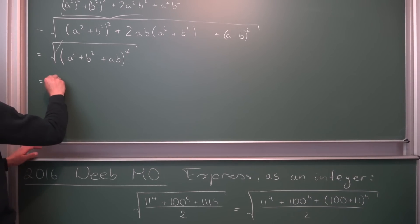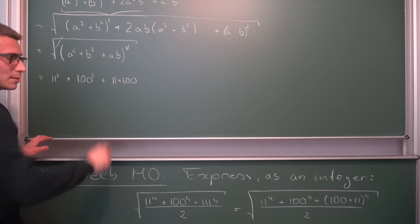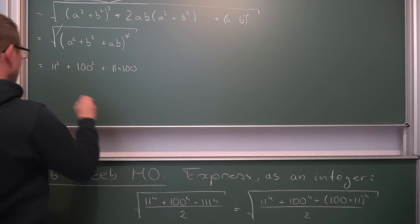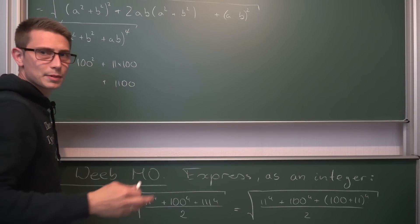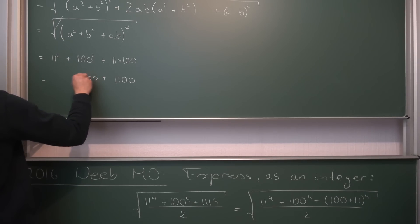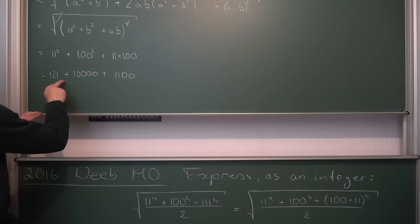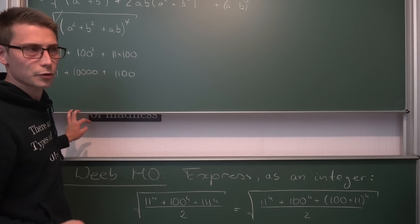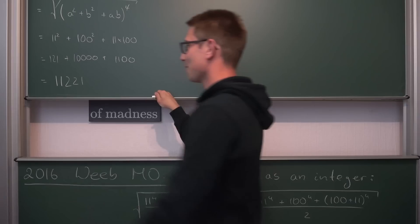Meaning a in our case was 11 squared plus b in our case was 100 squared plus. And a times b is 11 times 100. 11 times 100 is the same as 1,100. 100 squared is the same as 10,000. So we got 10k plus. And 11 squared is 121. Okay, adding those together. This right here is going to give us 1,221. And putting this onto our 10,000 gives us 11,221. Which is our final answer.